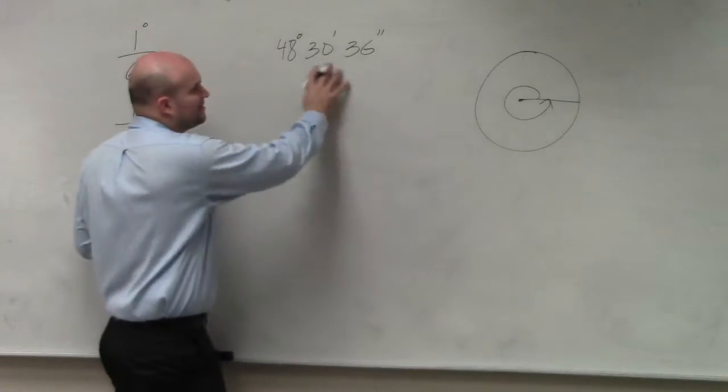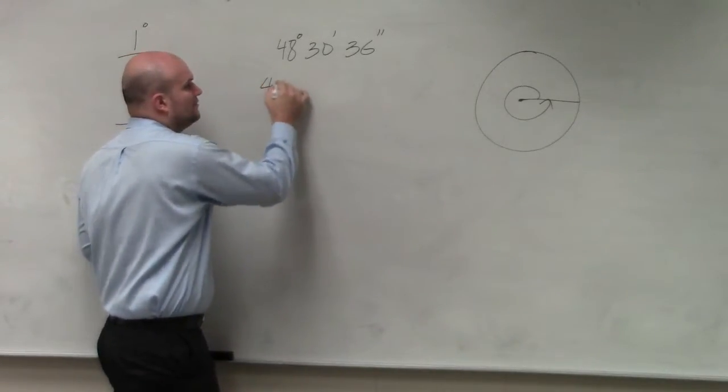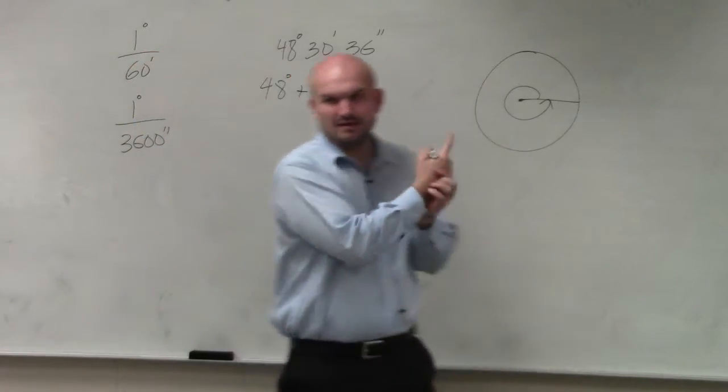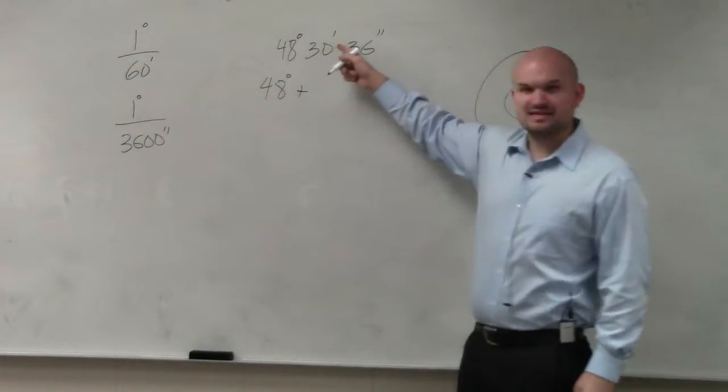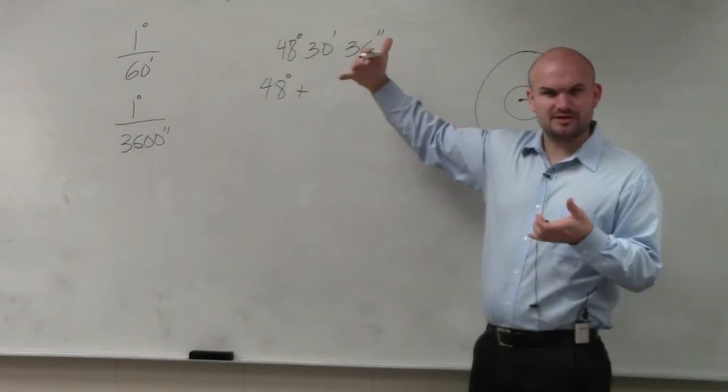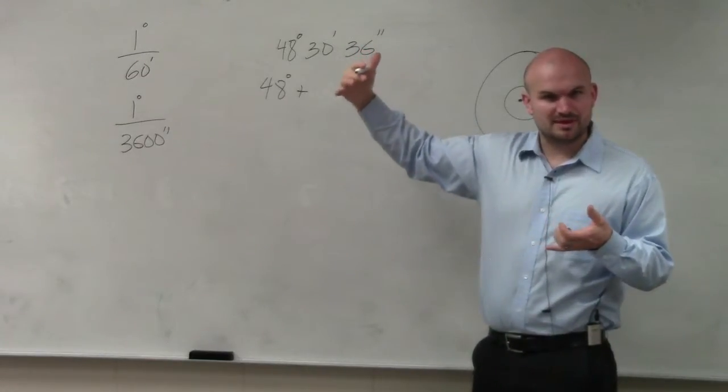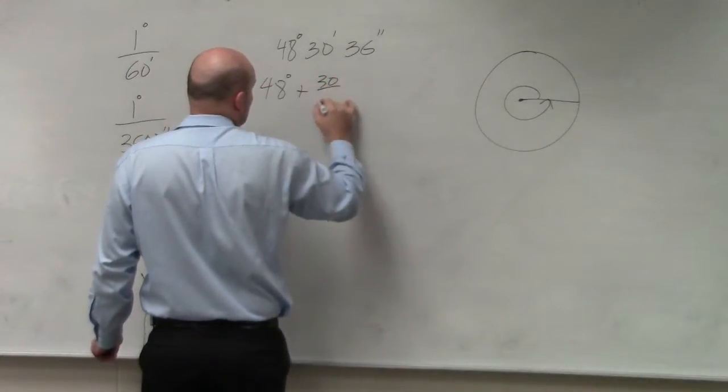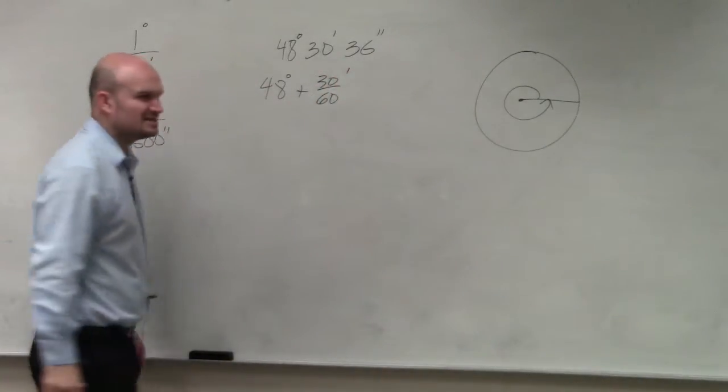So if I wanted to rewrite this as a decimal, basically what we have is 48 degrees plus how many, 30 minutes, but how many minutes does it take to make a degree? How many? 60. So we have 30 out of 60 minutes. Does that kind of make sense?